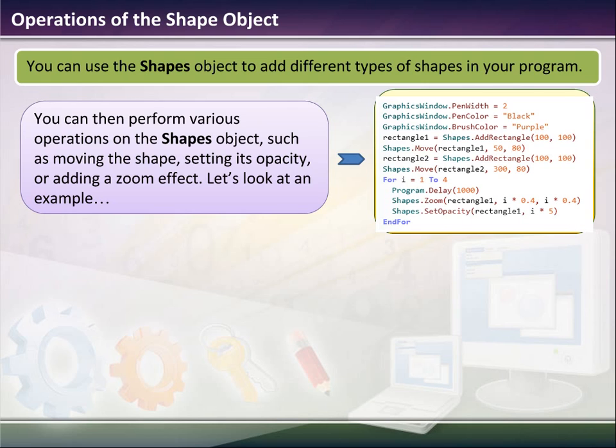We're going to open a graphics window. We're going to set the pen width to 2. We're going to use a pen color of black, a brush color of purple. We're going to define rectangle 1, which is a rectangle that goes from 100 to 100. Then we're going to use the shape move operator to move it to the point 50, 80. Then we're going to define rectangle 2, and that's going to be the same size. But we're going to move that object to 300, 80. So they both have the same y-coordinate but different x-coordinates.